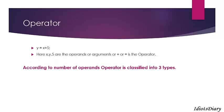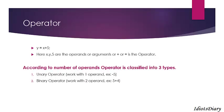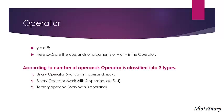According to the number of operands or arguments, the operators are classified into three categories. First is called unary operator, which works only with one operand. For example, minus 5 requires only one operand to work, so minus here is called the unary operator. Next, the operator called binary operator requires two operands to work. For example, in the expression 5 plus 4, plus needs two operands, so plus is called a binary operator.